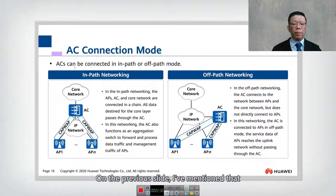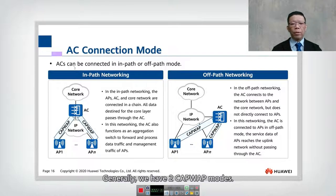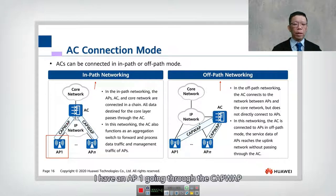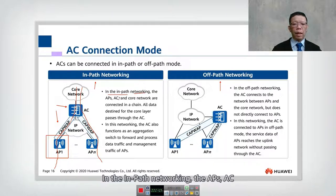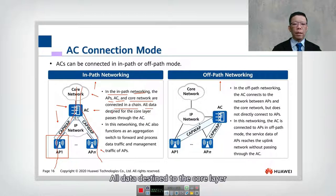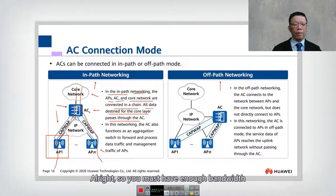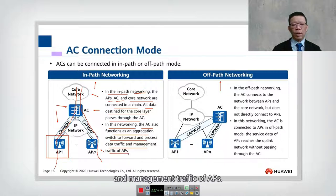Next, we look into the AC connection mode. On the previous slide, I mentioned that there are different modes in the CAPWAP. Generally, we have two CAPWAP modes: either in-path or off-path. In-path is very simple — the AP goes through the CAPWAP and the tunnel terminates at the AC. All traffic passes from the AP through the CAPWAP to the AC to go out. In the in-path networking, the AP, AC, and the core network are connected in a chain. All data destined to the core layer passes through the AC, so the AC must be very powerful and have enough bandwidth. In this networking, the AC also functions as an aggregation switch to forward and process both data traffic and management traffic of the AP.